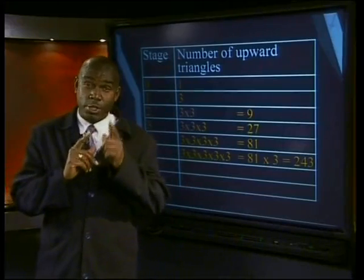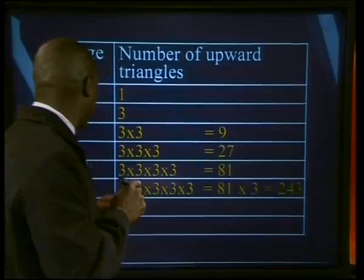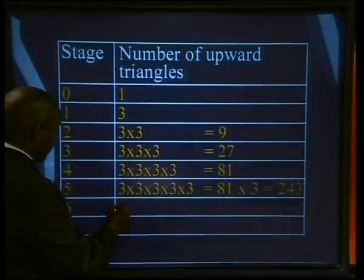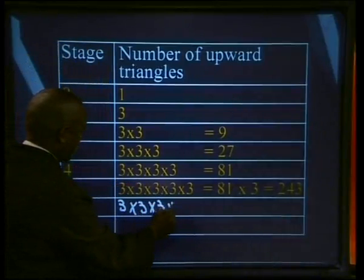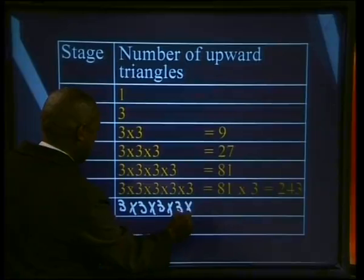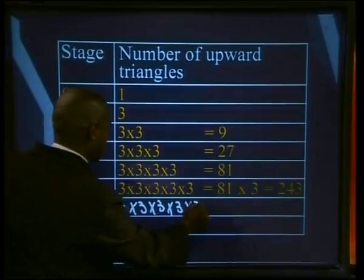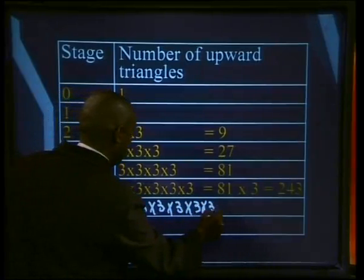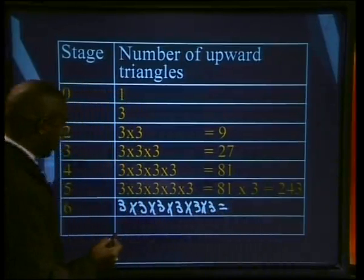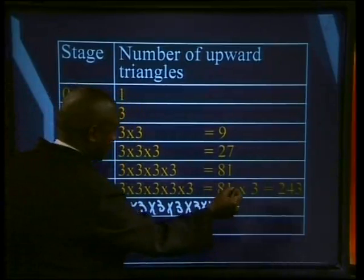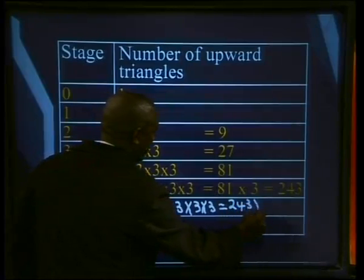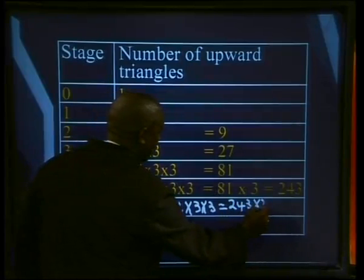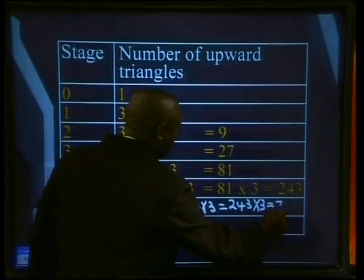We can keep making the triangle three times more in our minds. So at the sixth stage, we'll have 3 multiplied by 3, multiplied by 3, multiplied by 3, multiplied by 3, multiplied by 3 — six times. That will be the same as remembering that stage five gave us 243. That means we can multiply 243 by 3, which will give us 729.